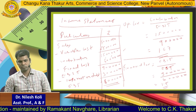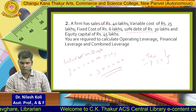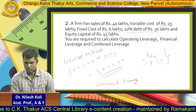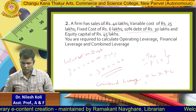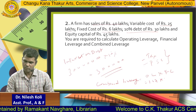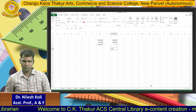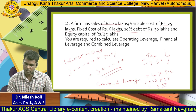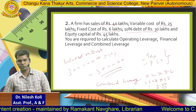Then we have to calculate the Combined Leverage. Combined Leverage = Operating Leverage multiplied by Financial Leverage. So Operating Leverage is 1.67 into Financial Leverage 1.5. So 1.67 into 1.5 equals 2.5. The answer is 2.5. This is how you can calculate operating leverage, financial leverage, and combined leverage.